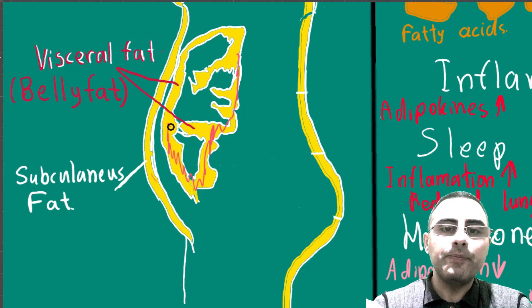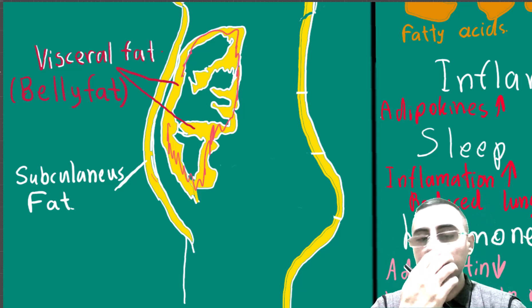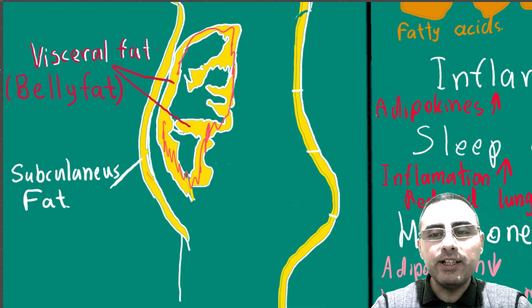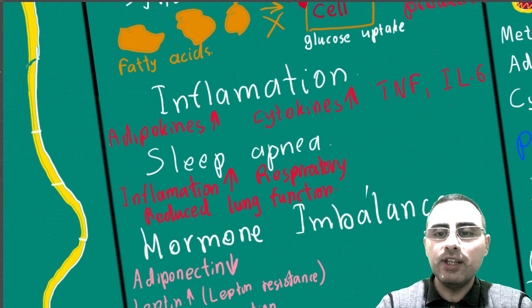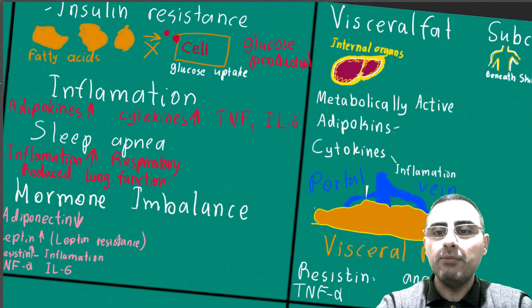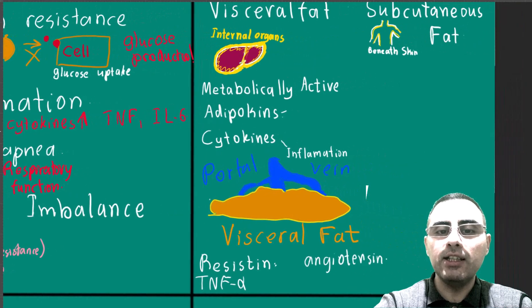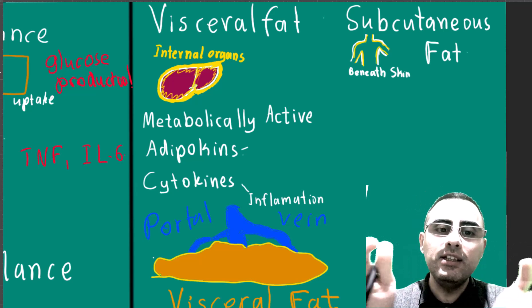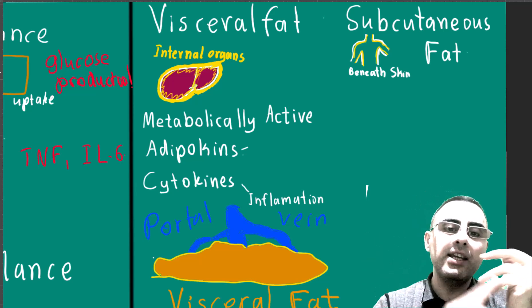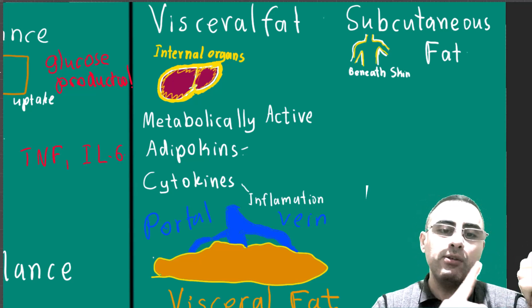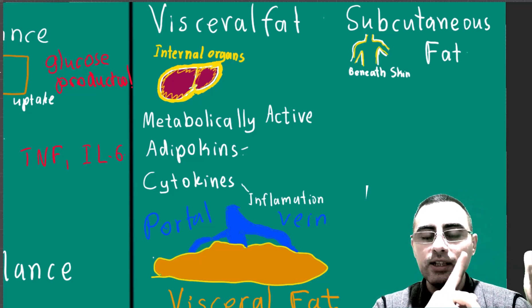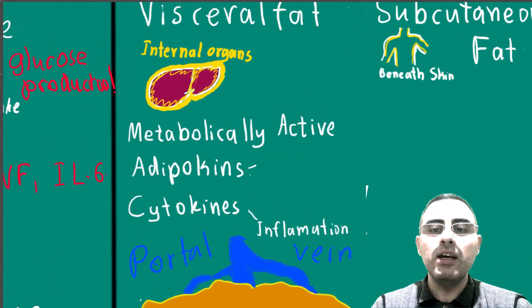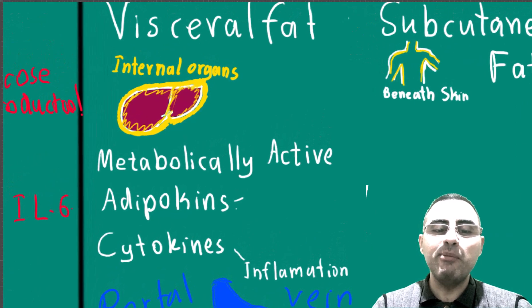Visceral fat is different from subcutaneous fat because it is metabolically active — that's the most important difference. Because it's metabolically active, visceral fat is associated with many diseases including diabetes, insulin resistance, cardiovascular disease, and several types of cancers.